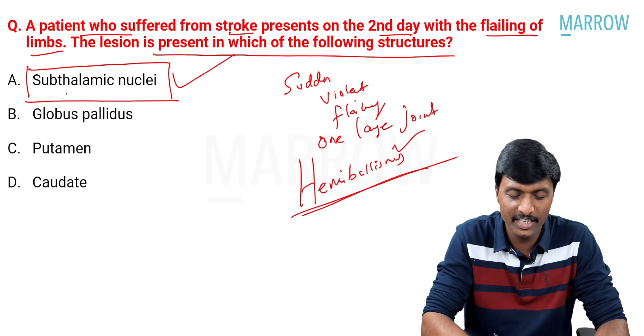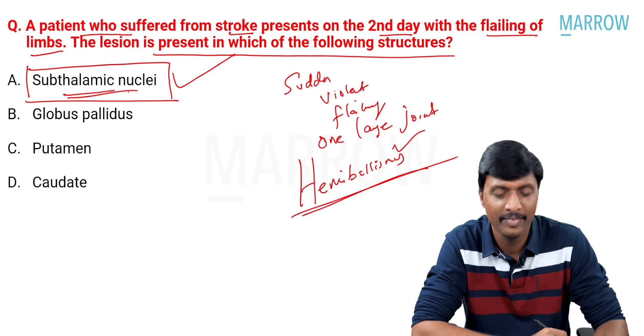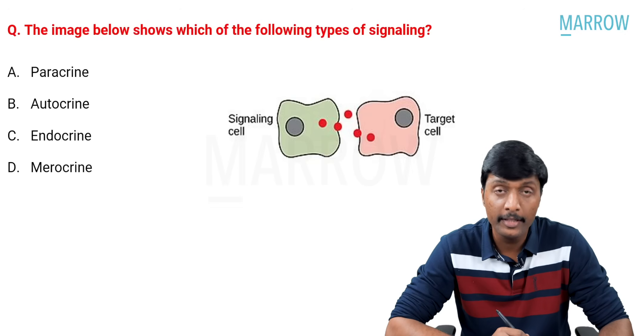So, hemiballismus lesion is in subthalamic nucleus. Very important. Now, look into this next question guys.